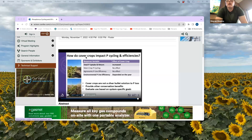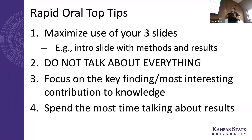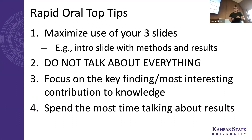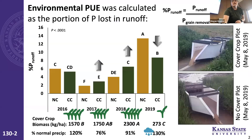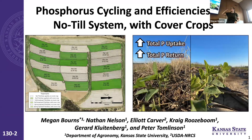Okay, back to tips. For the rapid oral — I did them back to back so you could see the difference in the amount of information given versus the poster presentation. The biggest thing is to maximize use of your three slides. Since you can't have animation and can only have three slides, you really want to make the most of them. For example, my first slide had my title and author affiliations — which were required — but I also used that slide to talk about my methods, my site, and even start talking about my results.